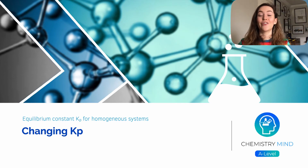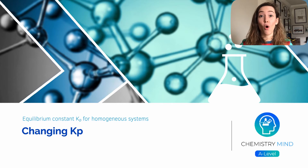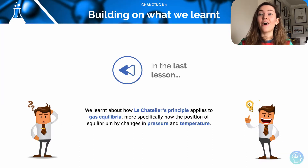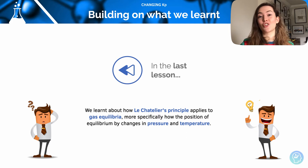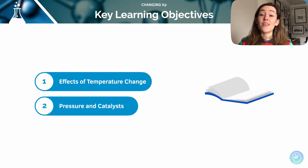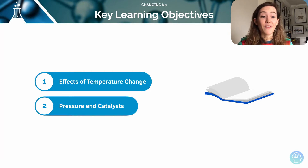Hi and welcome to this lesson looking at how factors can change the value of Kp. In the last lesson we had a look at Le Chatelier's principle and how it applies to gas equilibria. We looked specifically at how the position of the equilibria changes with pressure and temperature. In this lesson we're going to look a little bit more about how Kp is affected by changes of temperature, pressure and catalysts.